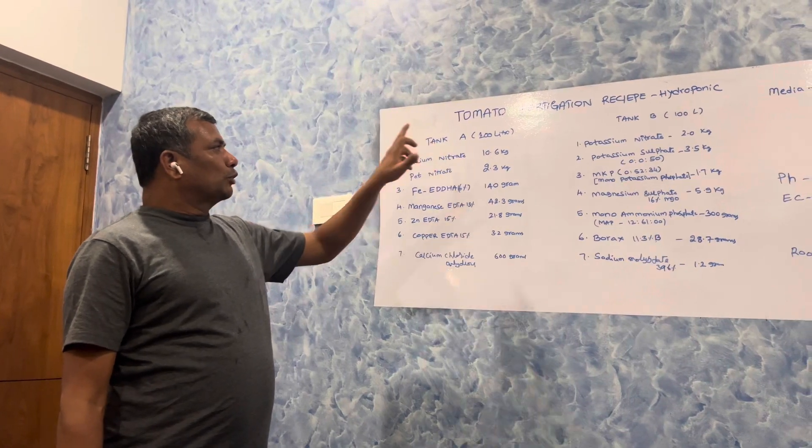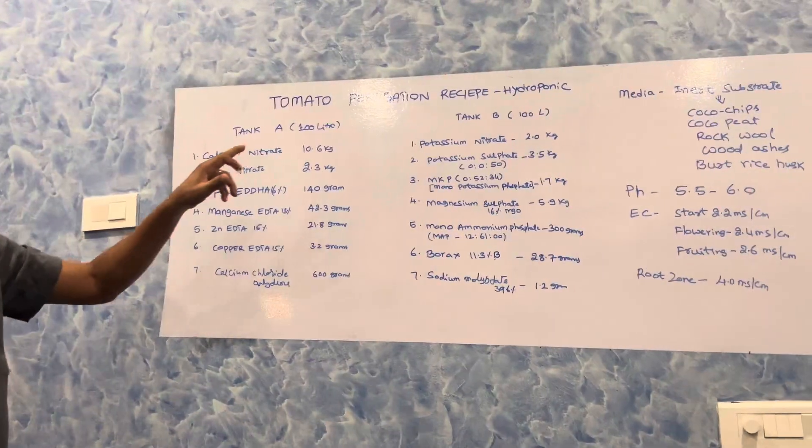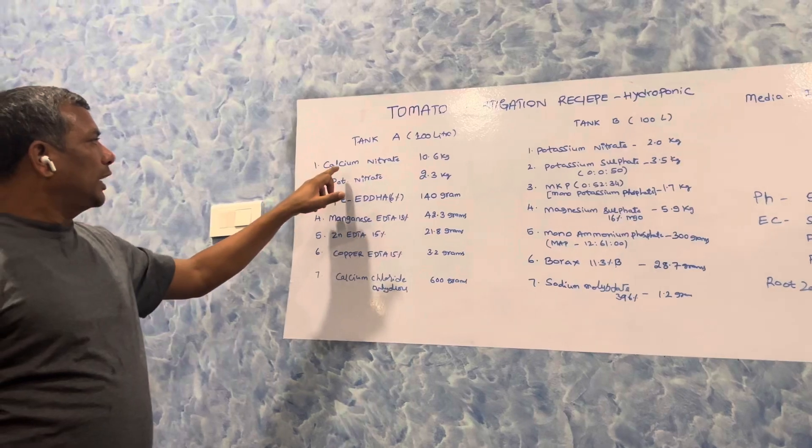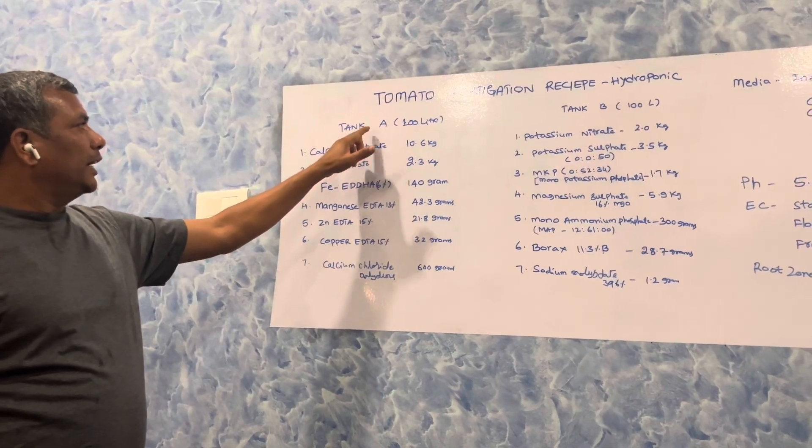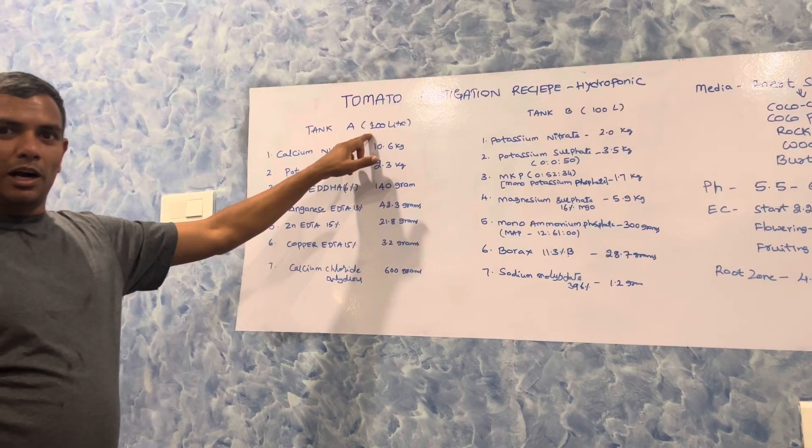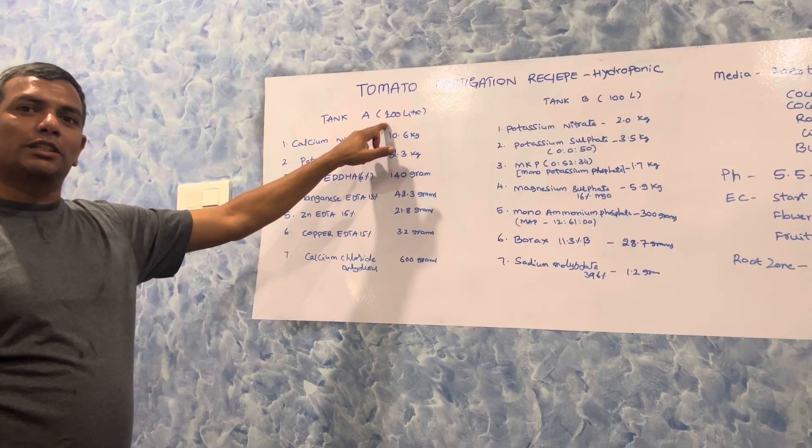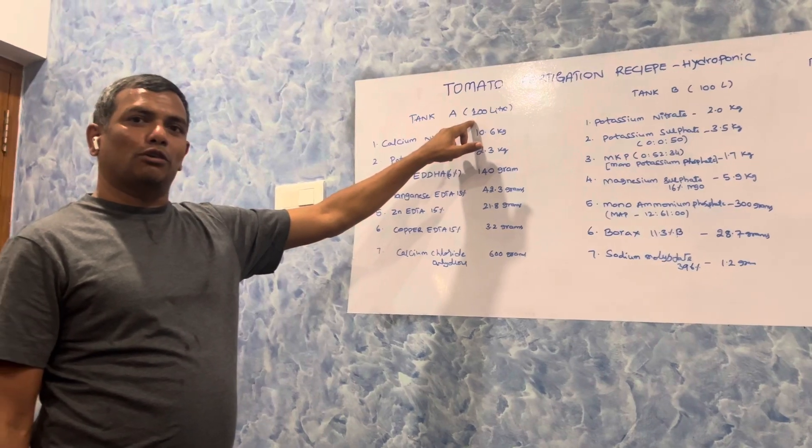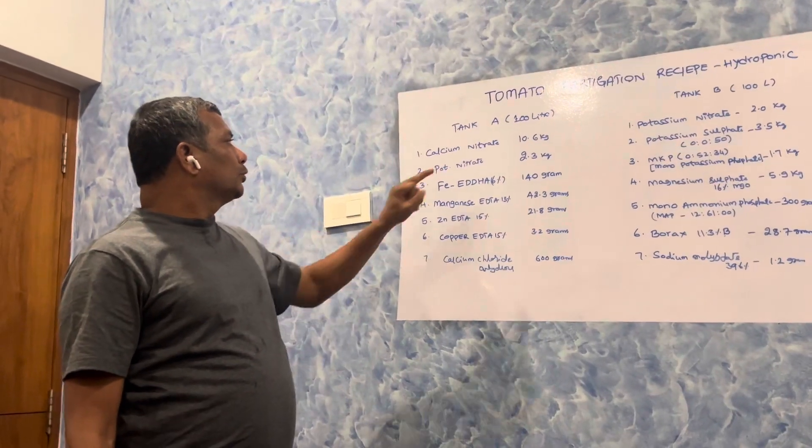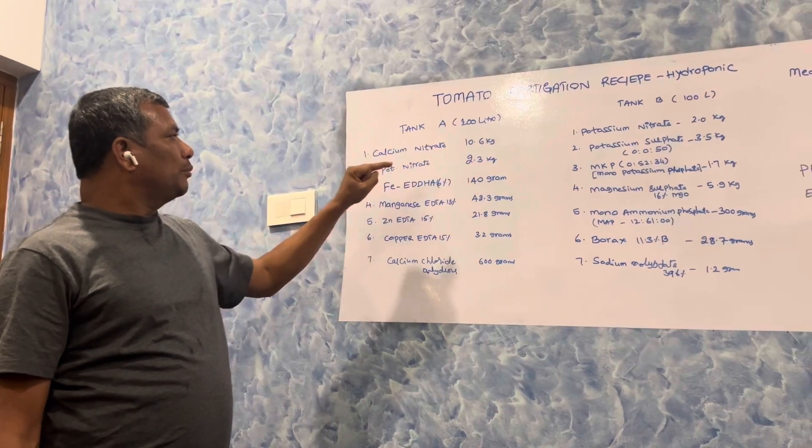First, we are dividing into two tanks, A tank and B tank. In the A tank, we use calcium nitrate 10.6 kg for 100 liters of water, which has EC below 1 and pH around 5.5. Calcium nitrate 10.6 kg, potassium nitrate 13-0-45, 2.3 kg.